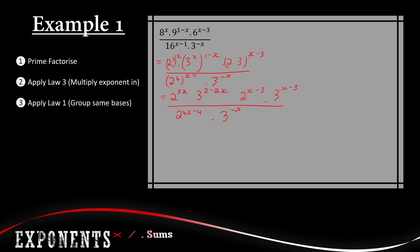We apply laws one and two: when multiplying the same bases we add the exponents, and when dividing we subtract the exponents. For base 2, everything at the top adds: 3x plus x minus 3, then minus the denominator term in brackets: 4x minus 4. The bracket reminds us the negative applies to both terms. For base 3, we have 2 minus 2x plus x minus 3, then minus negative x.